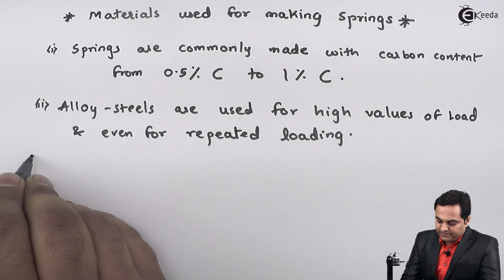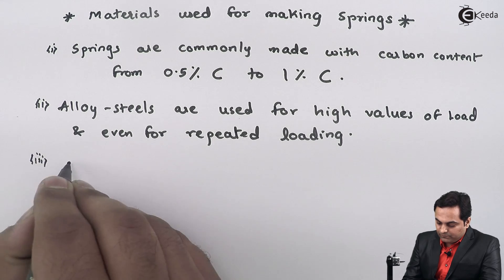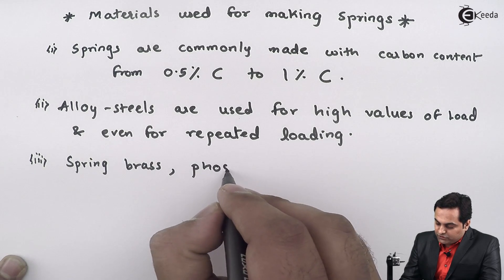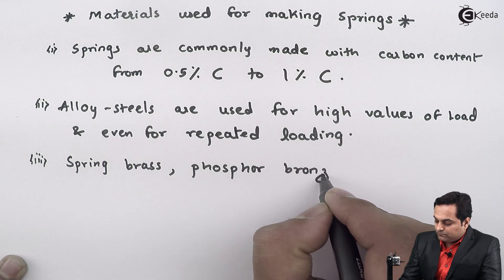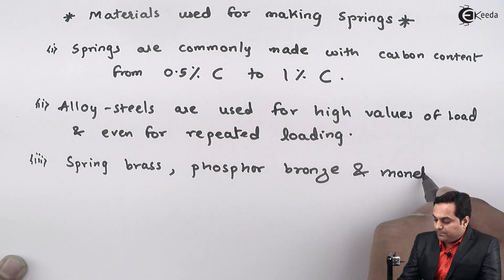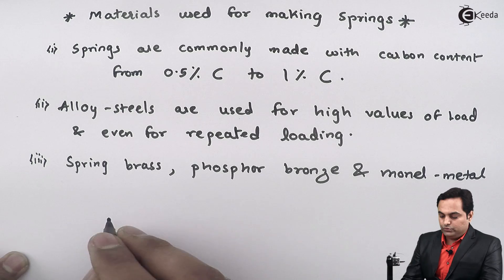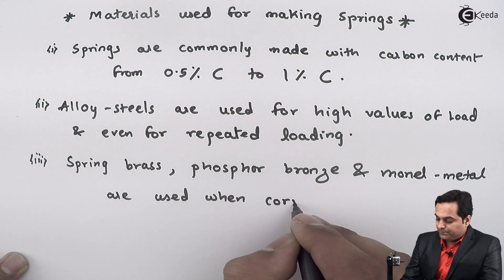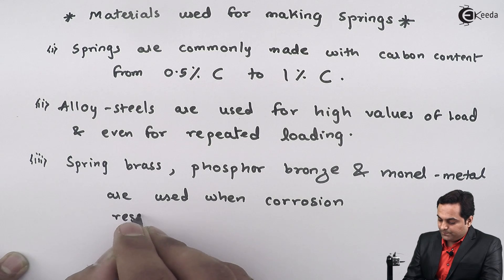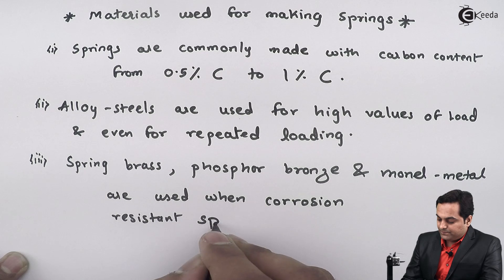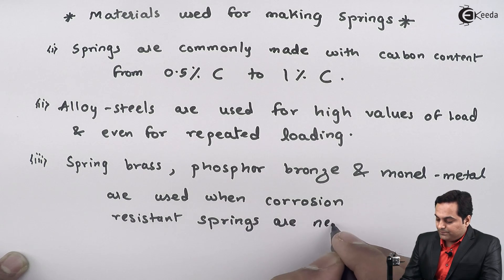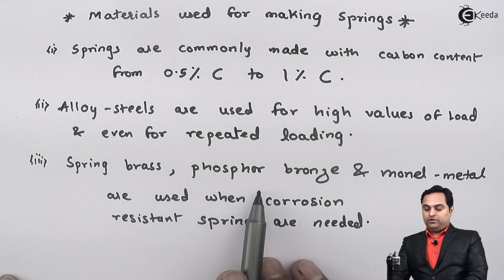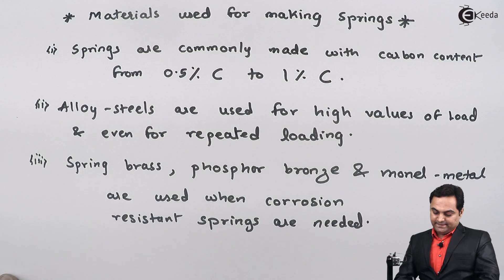Next, the materials spring brass, phosphor bronze, and monal metal — these three are used when corrosion resistant springs are needed. That is, if we want corrosion resistant springs, then the material we will select would be either spring brass, phosphor bronze, or monal metal.